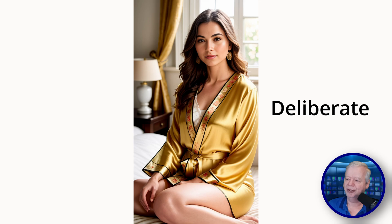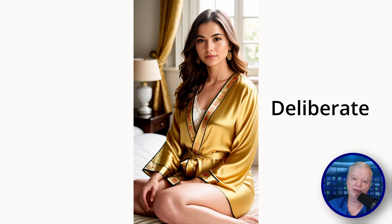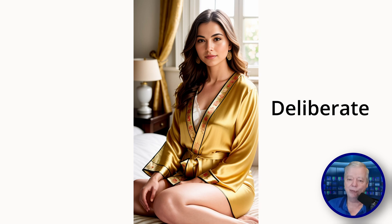The next one is Deliberate — an old-time favorite for photorealistic images, and it returns a great image. As you can see on the screen, it almost looks absolutely perfect. The only things that stand out are the earrings, which are a little blurry when they should be much crisper and sharper at this style of shot, and the embroidery on the robe isn't quite what I described — it put more of the embroidery on the accents of the robe rather than on the robe itself.